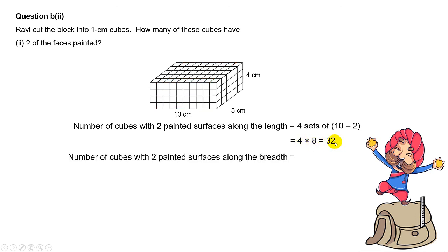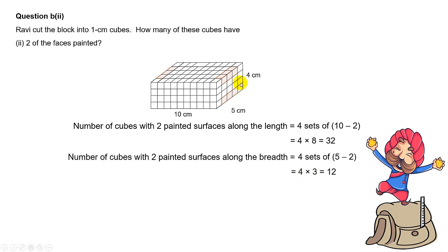Now look at the breadth. The breadth edges will be here, here, here, and here. So it will be 4 sets of 3 — because each row has 3 cubes — giving you 12 cubes.